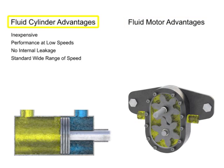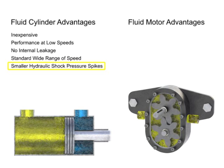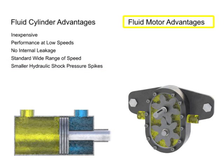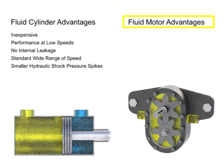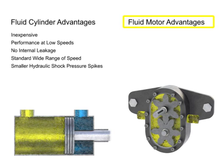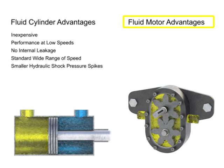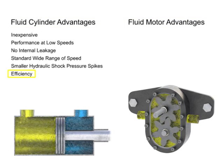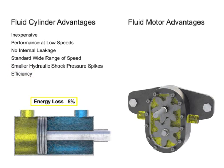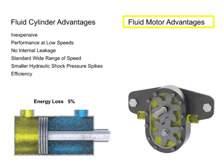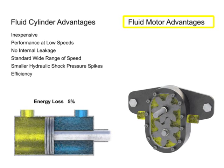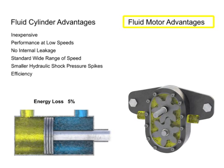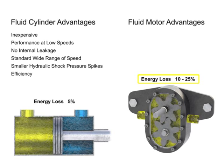Cylinders also produce smaller pressure spikes, called hydraulic shock, when stopped suddenly. Fluid motors tend to produce a much larger amount of hydraulic shock if stopped suddenly, due to the momentum energy contained in their rapidly rotating loads. Finally, cylinders are much more efficient than the typical fluid motor. Energy loss can be held to about 5% in a well-constructed cylinder. But fluid motors, or pumps, experience power losses from fluid leakage and friction within the device. These losses can be anywhere from 10% to 25% of the input power.